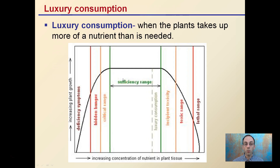Something called luxury consumption is when plants take up more of a nutrient than is needed. We're within our sufficiency range, but at the very top, the plant is just taking in more nutrients than it needs. Especially if you're looking at leafy greens, this can be an issue with excess nitrogen being taken up by the plant because of the grower overfeeding that particular nutrient.